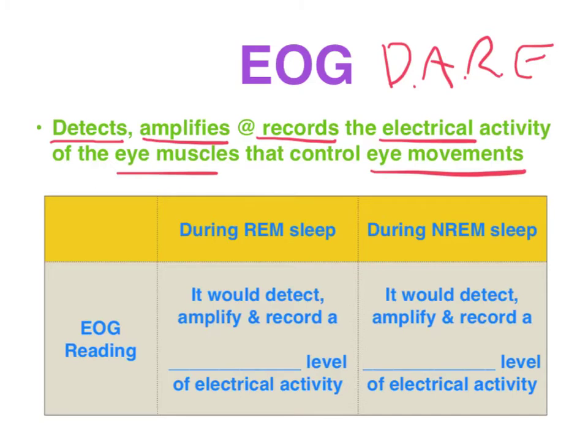An EOG is less useful for determining levels of alertness during normal waking consciousness but is highly useful in sleep studies, indicating whether the sleeper is in REM or non-REM. In a sleep lab, during REM sleep it would detect, amplify and record a higher level of electrical activity in comparison to non-REM sleep.